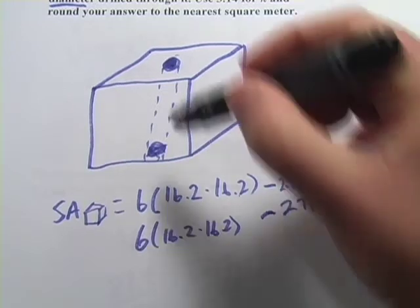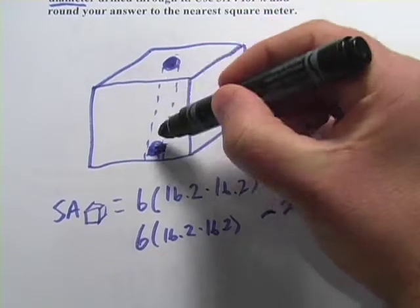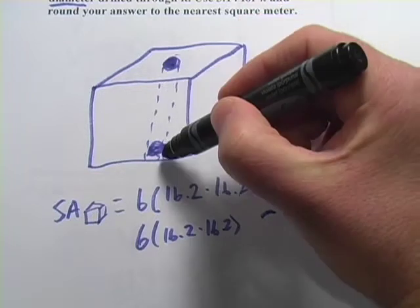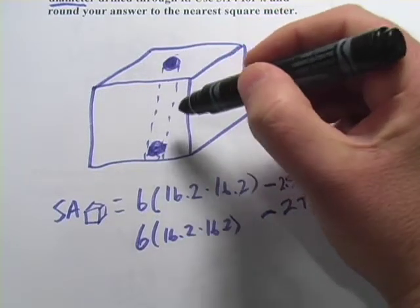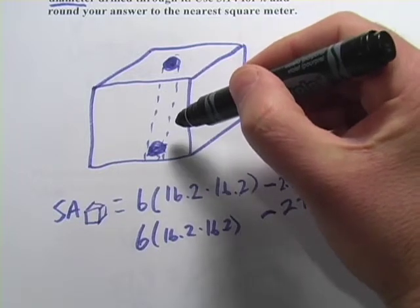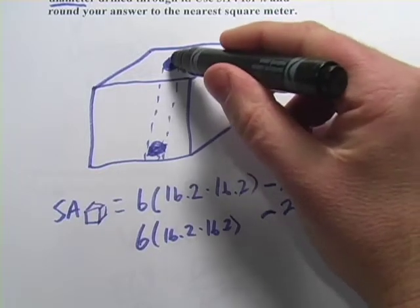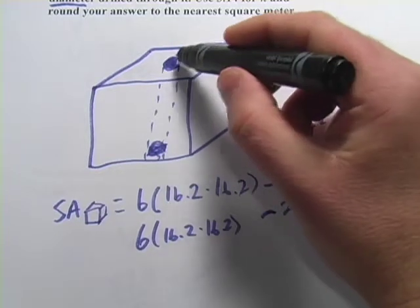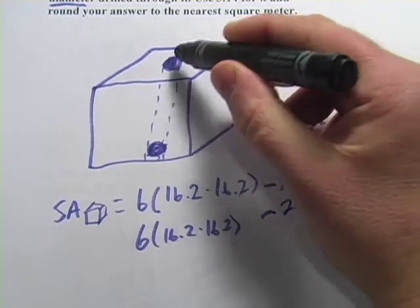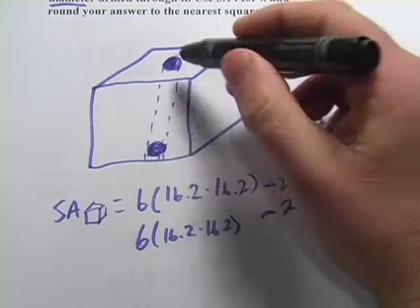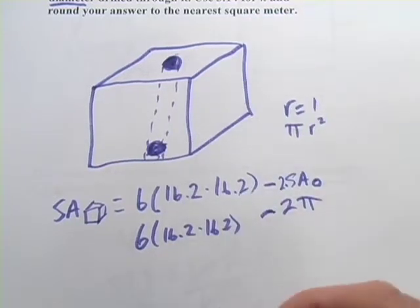But we're not done yet because inside, there is now a cylinder that's been drilled through here, and that is the walls of that cylinder are actually more surface area. So we have to figure out the surface area of this cylinder. Remember, it doesn't have the two tops, the top and the bottom here. Those are just holes, but the walls of the cylinder.